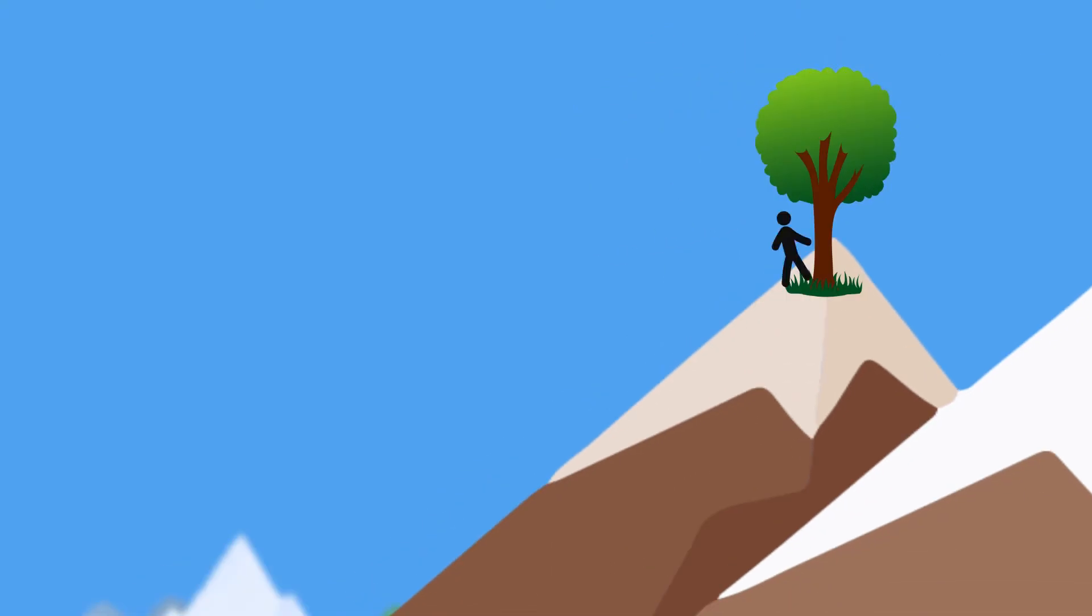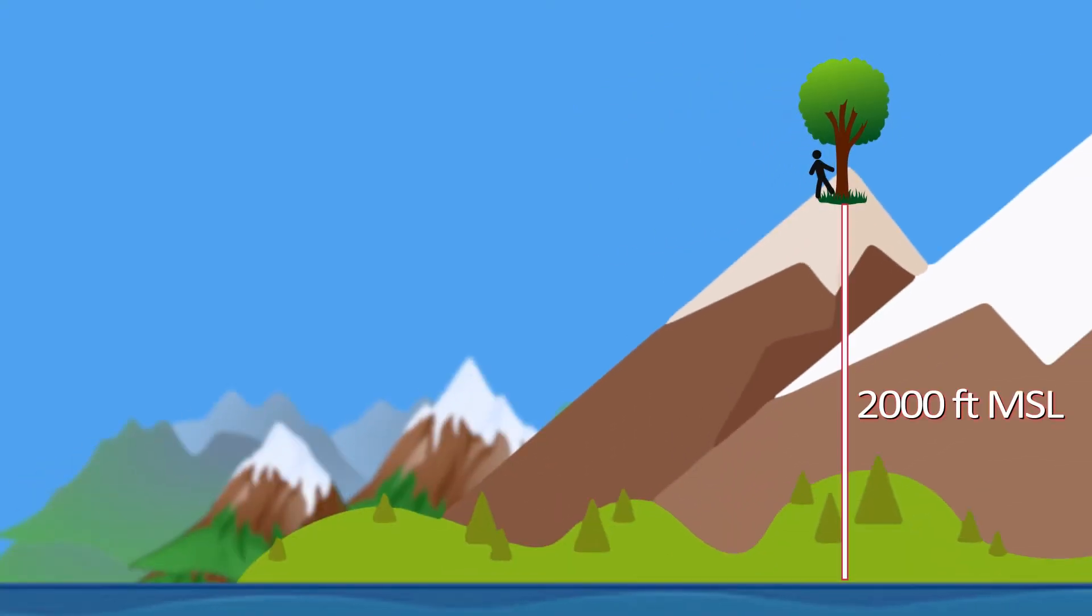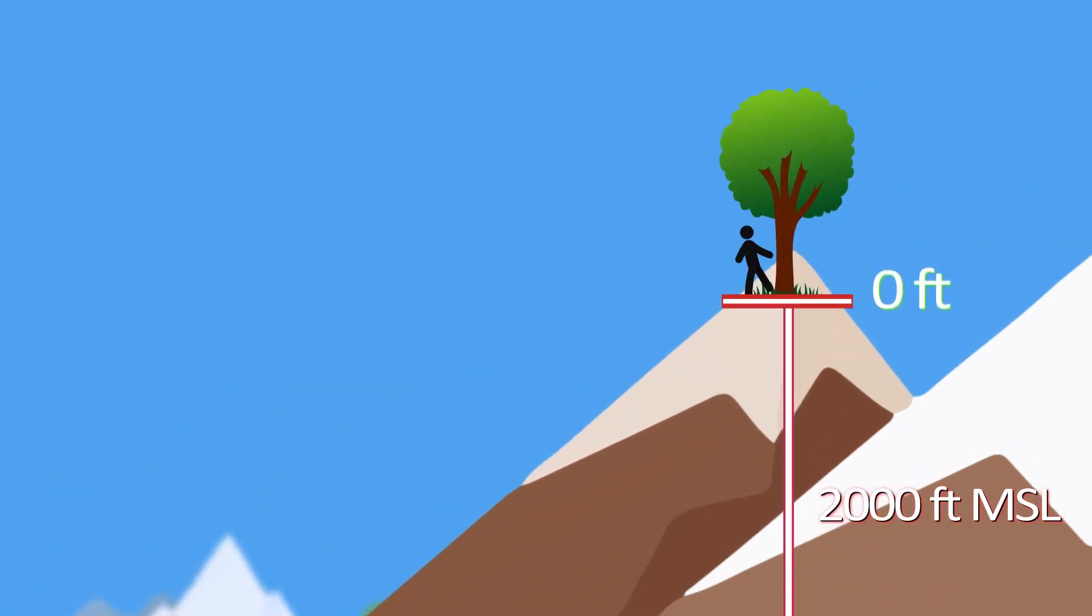Now, if you're already at the top of the mountain and standing on the ground, you would be at 2,000 feet MSL and zero feet Above Ground Level (zero feet AGL), since you're literally standing on the ground. But once you climb to the top of that 50-foot tree, now 50 feet up, you're gonna be at 2,050 feet MSL.